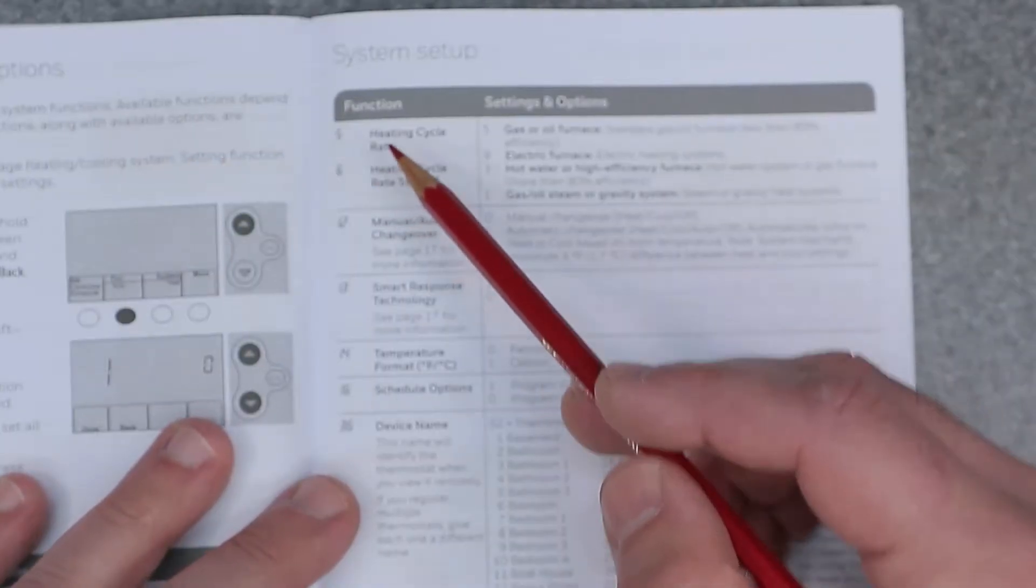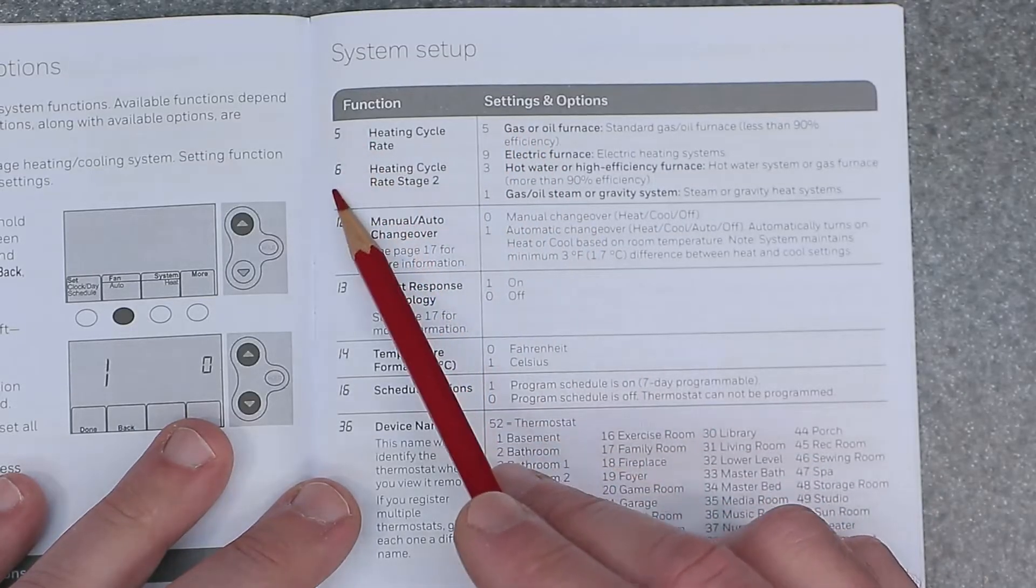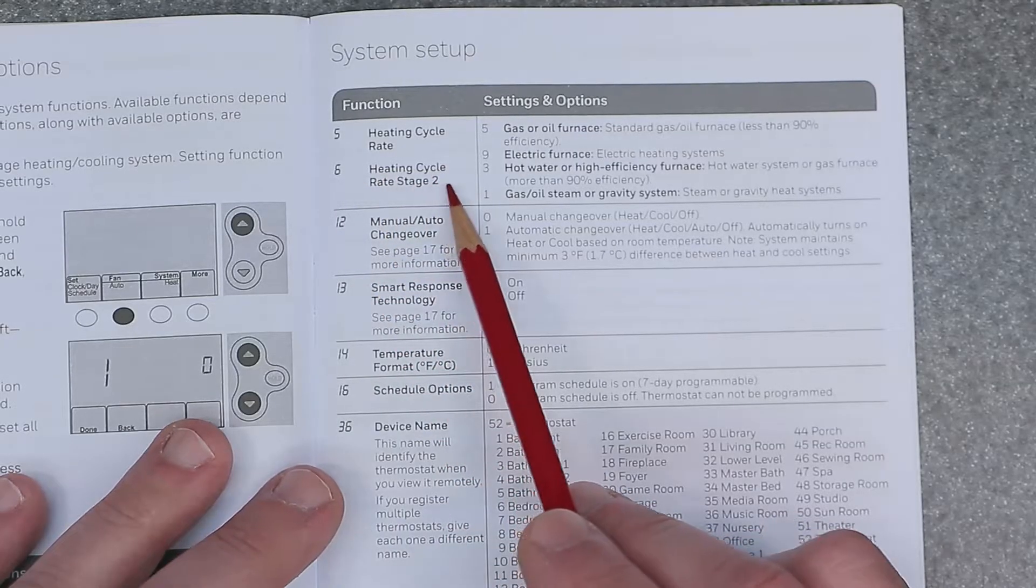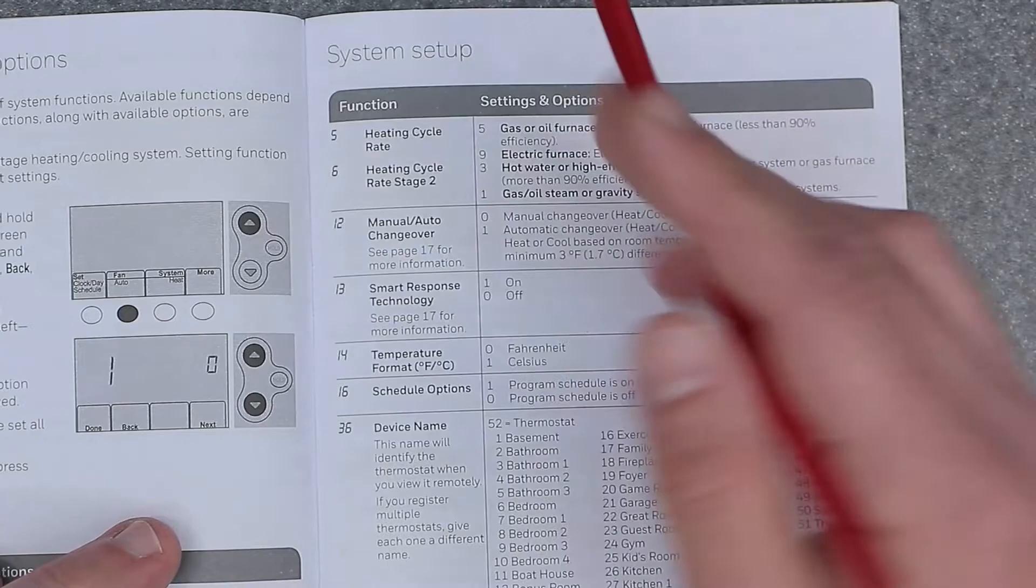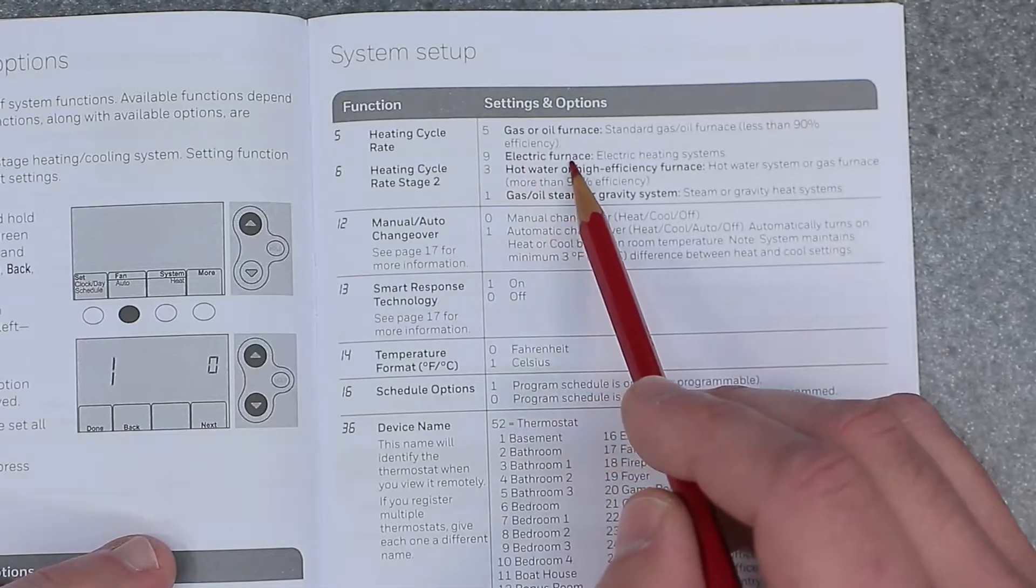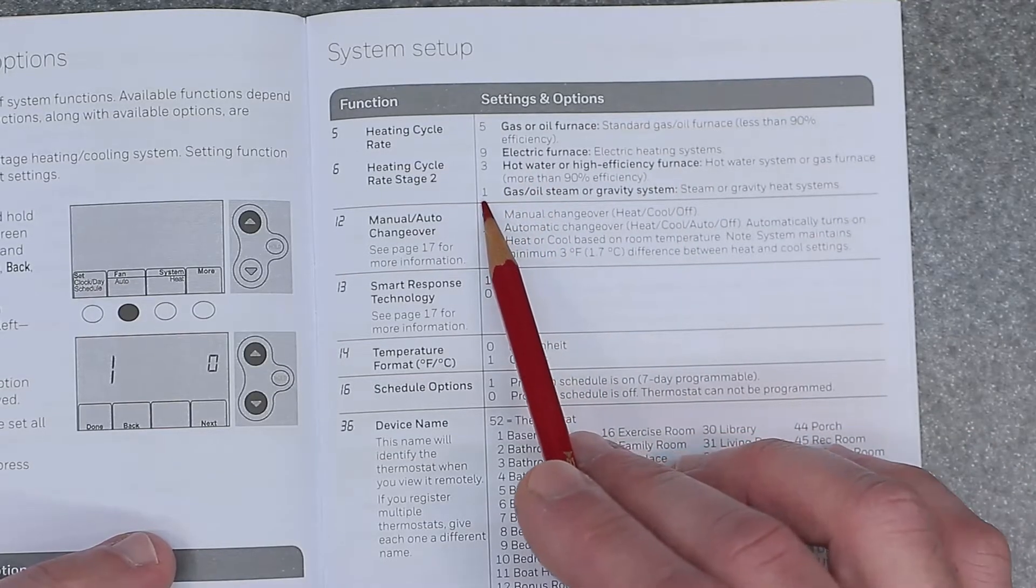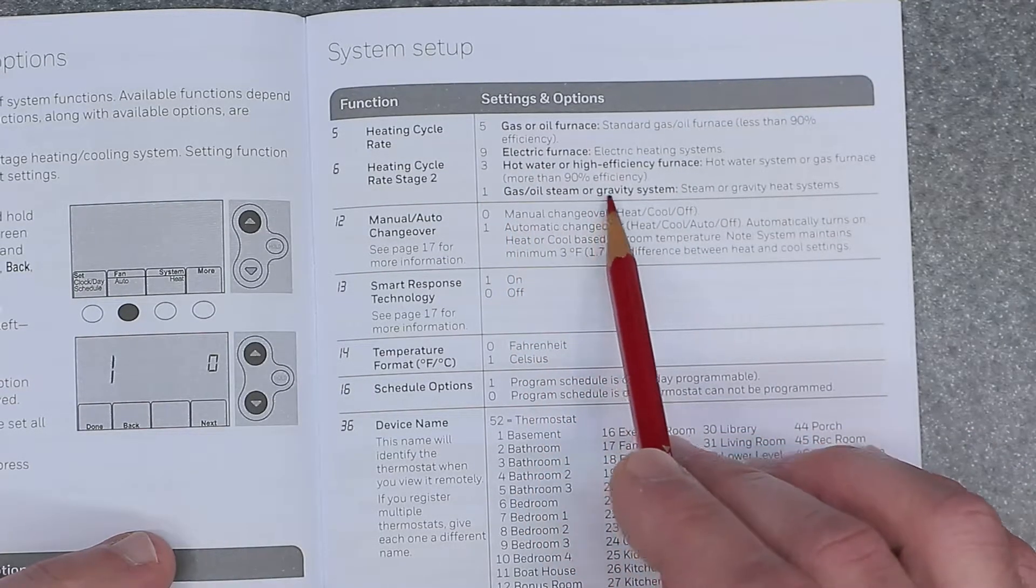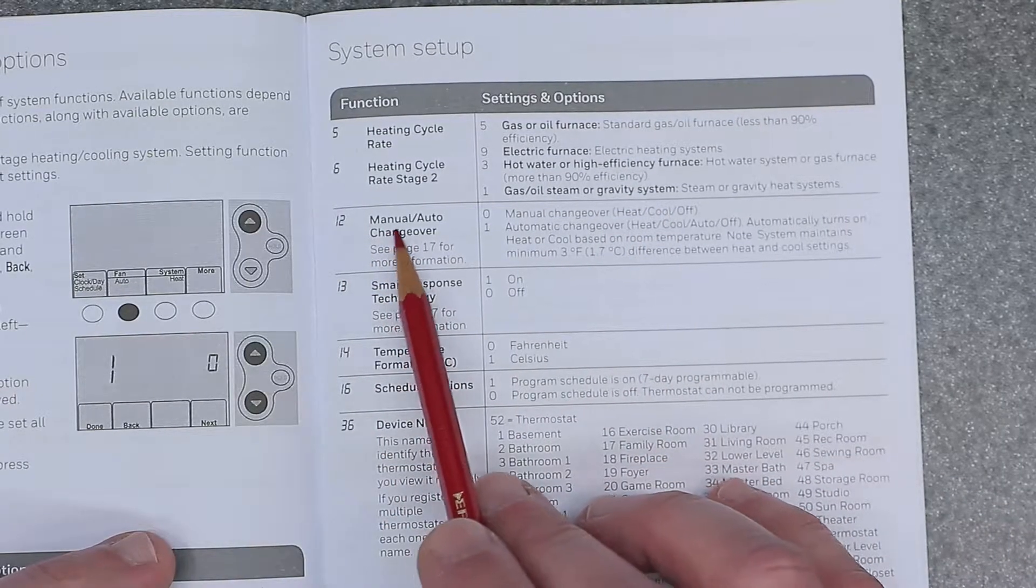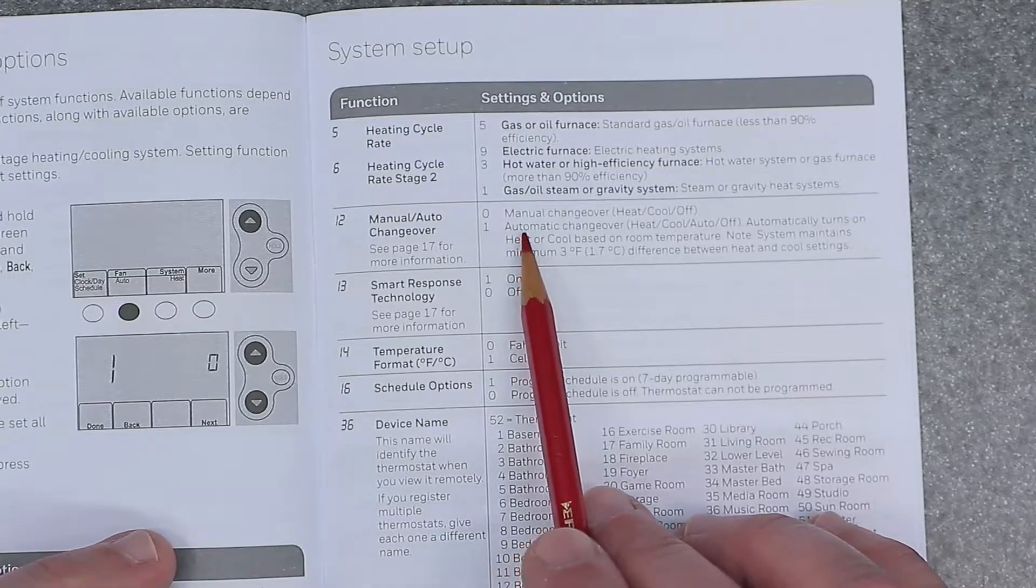Function number five is going to be heating cycle rate. And that's the same thing with number six. So number five is heating cycle rate. And six is heating cycle rate stage two. So these are going to have the same options on the right hand side. So we have five is gas or oil furnace. Nine is electric furnace. Three is hot water or high efficiency furnace. Number one is going to be gas, oil, steam, or gravity system. Function number 12 is manual or auto changeover. Zero is going to equal manual changeover. One is going to be automatic changeover.